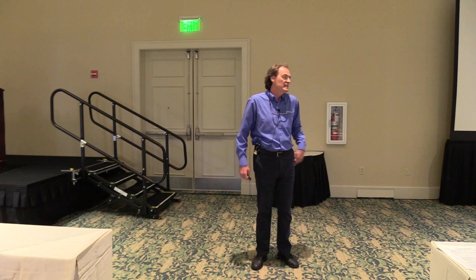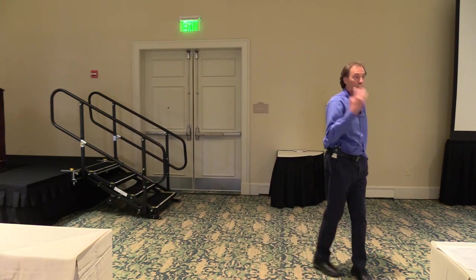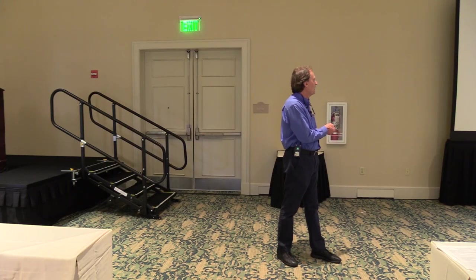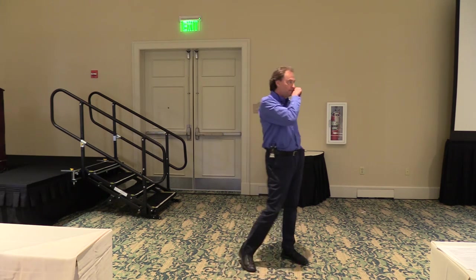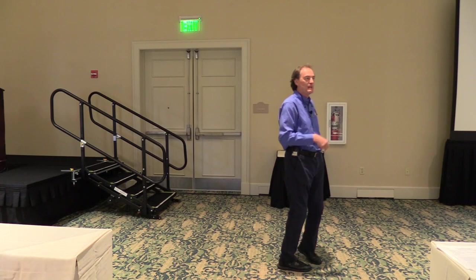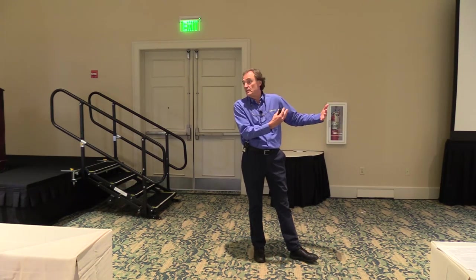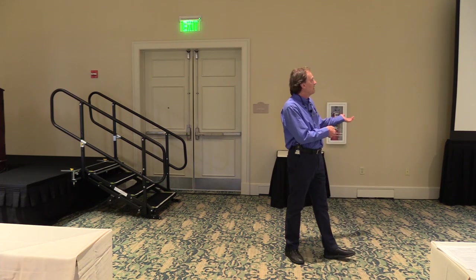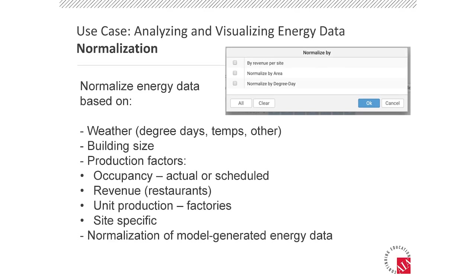If I have a portfolio, building size would matter — bigger building, more consumption. So if I'm looking at performance I need to normalize for that. But then you want to go further into what we call the production factor: what are these buildings being used for? If it's a factory, maybe we're making cans of paint and we want to track how much energy the production line used. We used a lot less yesterday — but wait, we didn't make any cans of paint yesterday. So we can bring in production data. It could be unit production in a factory, or for fast food restaurants, the production factor is how many meals they served — because meals cost energy. What's the revenue per restaurant before I decide which one in my chain is more or less efficient?